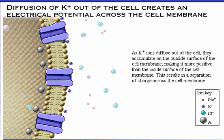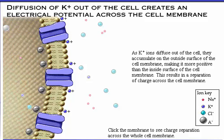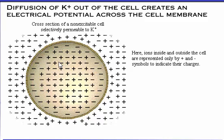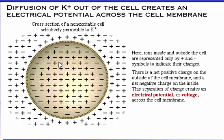As potassium ions diffuse out of the cell, they accumulate on the outside surface of the cell membrane, making it more positive than the inside surface. This results in a separation of charge across the cell membrane. Ions inside and outside the cell are represented by plus and minus symbols to indicate their charges. There is a net positive charge on the outside of the cell membrane and a net negative charge on the inside. This separation of charge creates an electrical potential across the cell membrane.